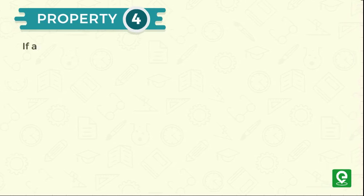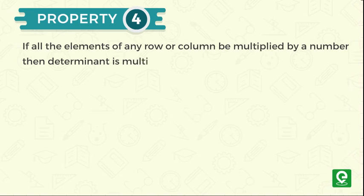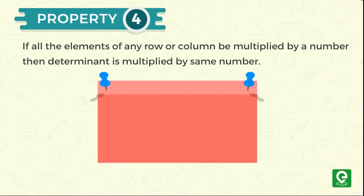Property 4: If all the elements of any row or column are multiplied by the same number, then the determinant is multiplied by the same number. For example,